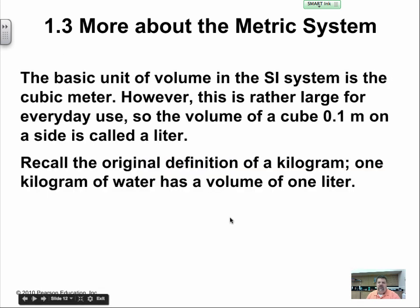The basic unit of volume in the SI system is a cubic meter, however this is rather large for everyday use. So the volume of a cube of 0.1 meters on a side is called a liter. A cubic meter converts out to about 1000 liters. So a standard unit would be a liter, which is 0.1 meters per side.